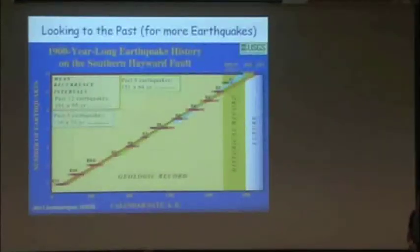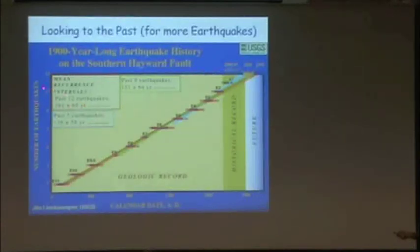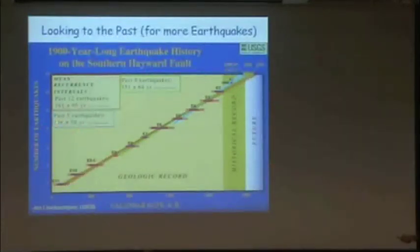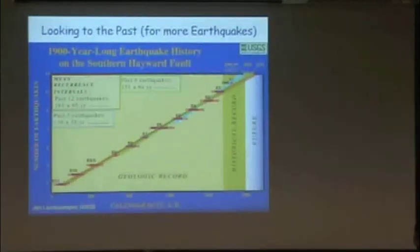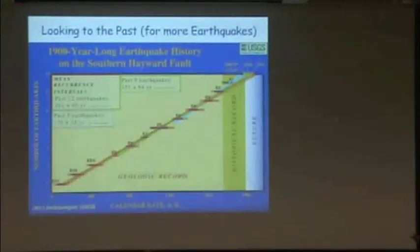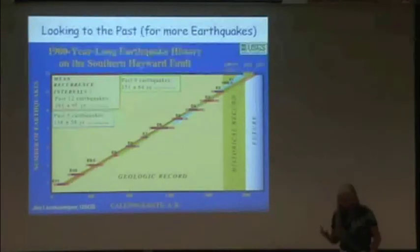The average recurrence interval, depending on how many earthquakes we use, is about 140 to 160 years, plus or minus about 58 years. So we don't know exactly when the next earthquake is going to happen — it could happen any time.